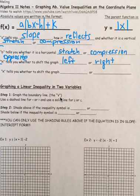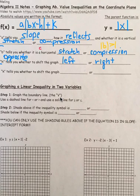For the b value, for a compression, rather than being between 0 and 1, this is when the absolute value of b is greater than 1. And for the stretch, it's when the absolute value of b is less than 1. So it's just the opposite of what happens with a vertical stretch or compression.